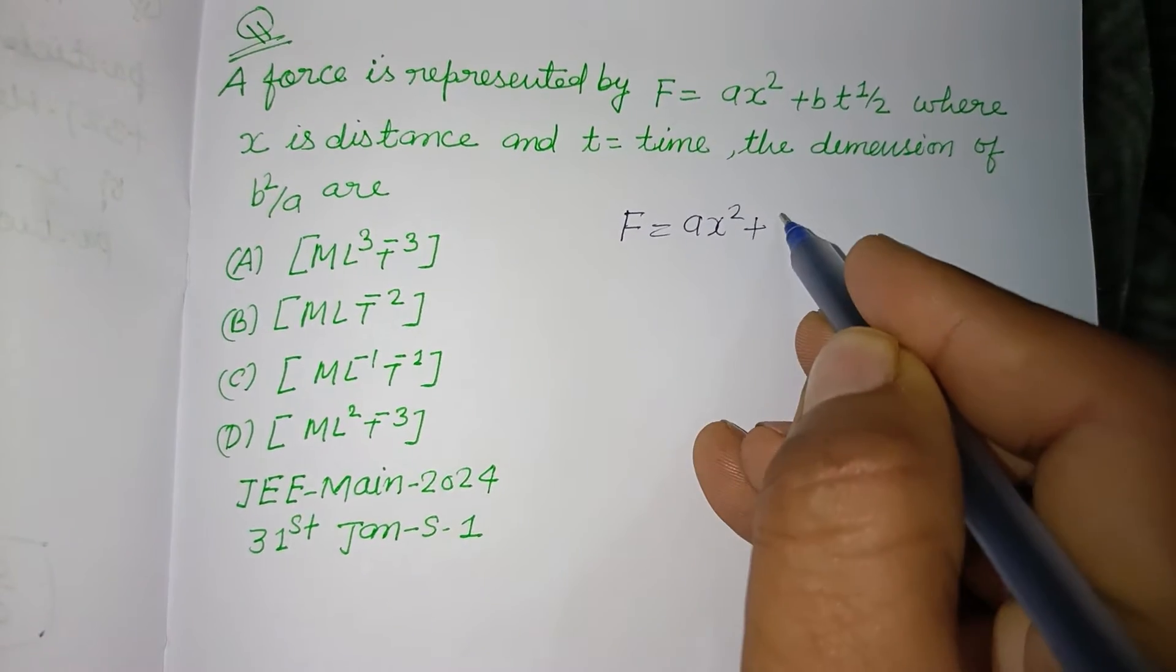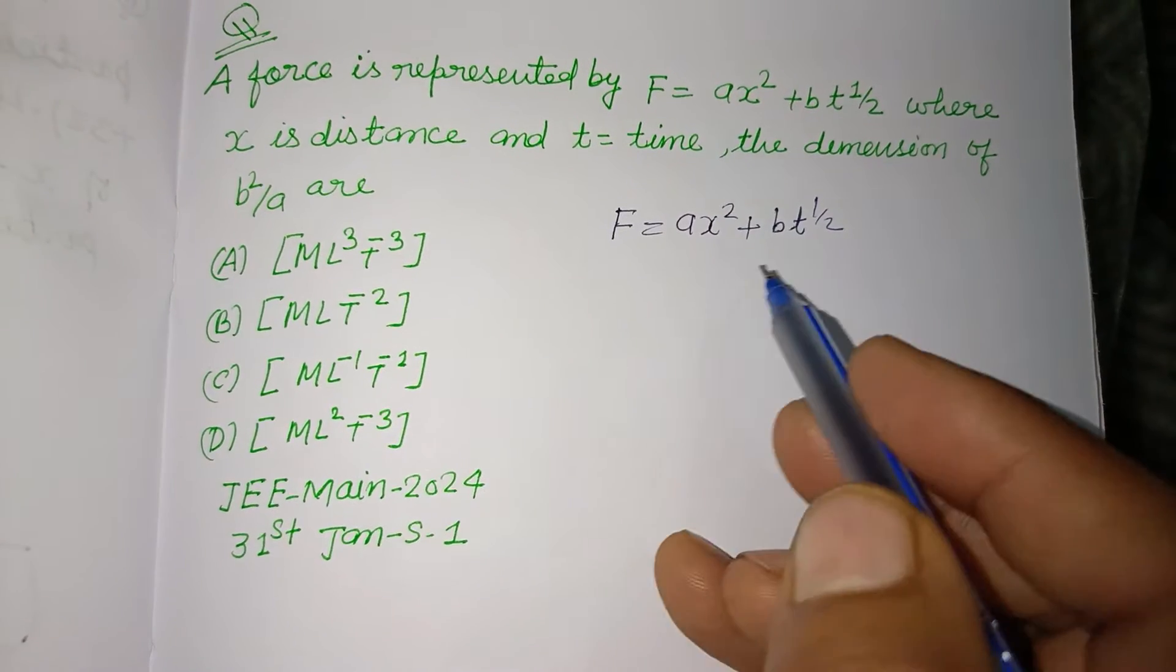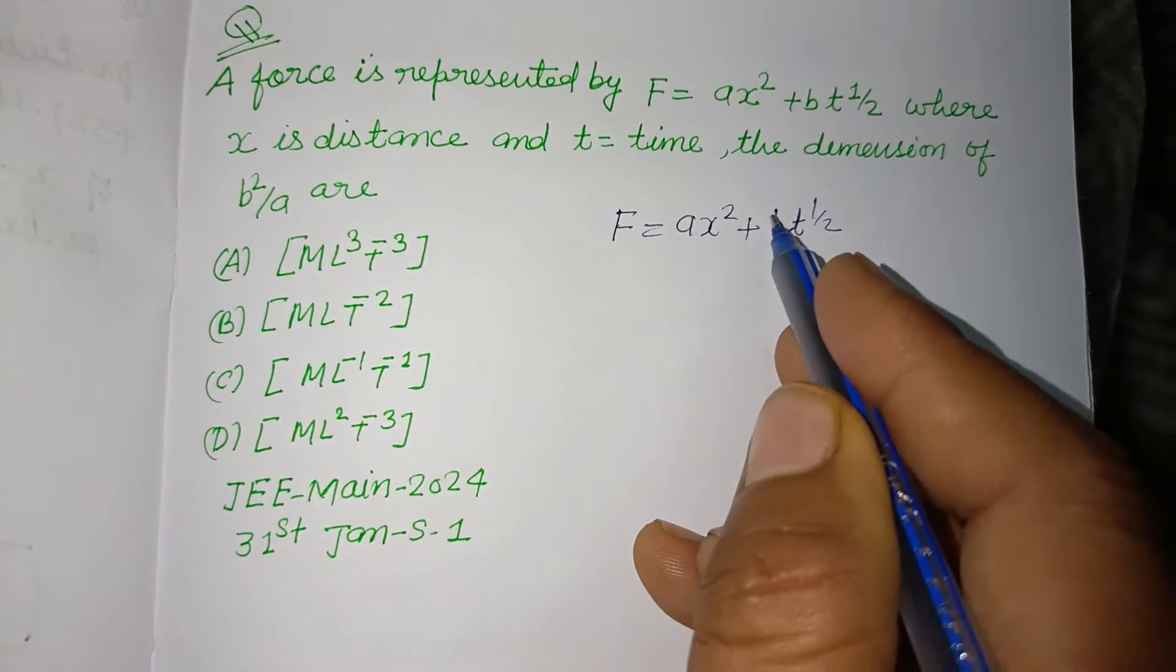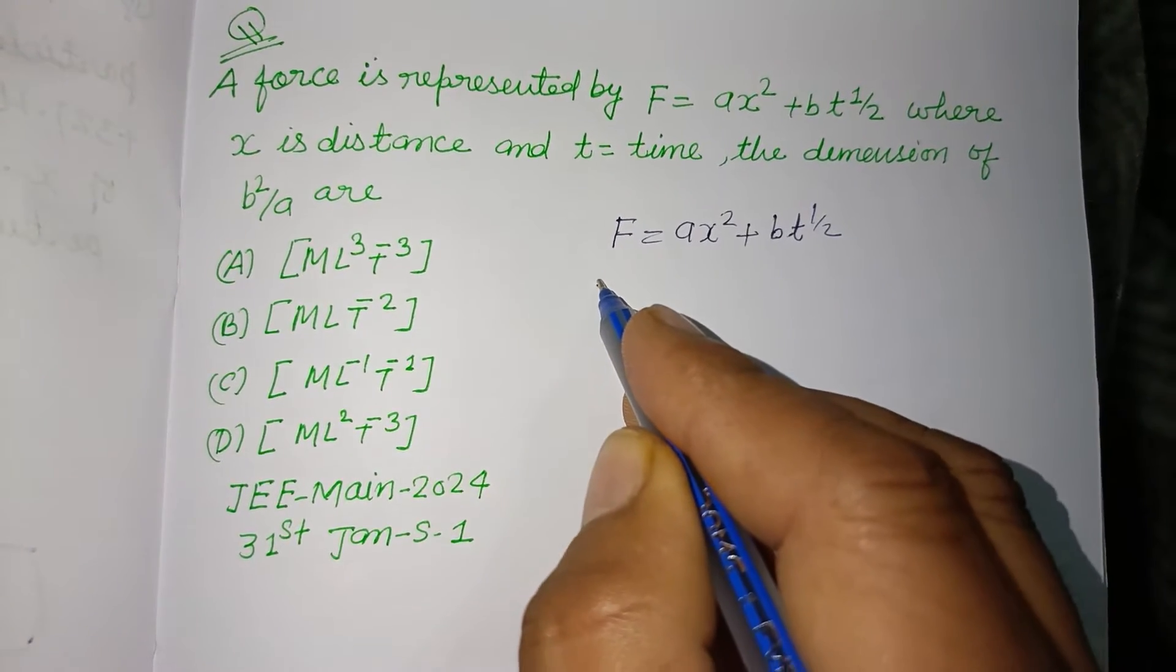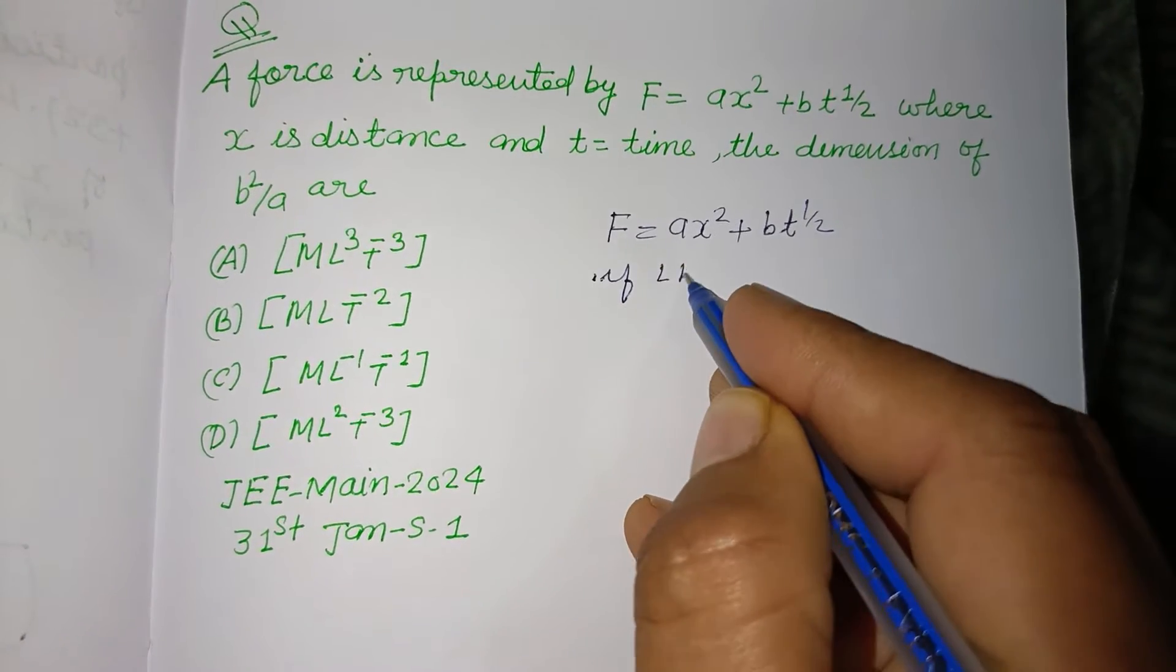So students, force is given to us as ax² plus bt^(1/2). Using homogeneity of dimensions, if the left-hand side is force, then all terms in the right-hand side are also force.